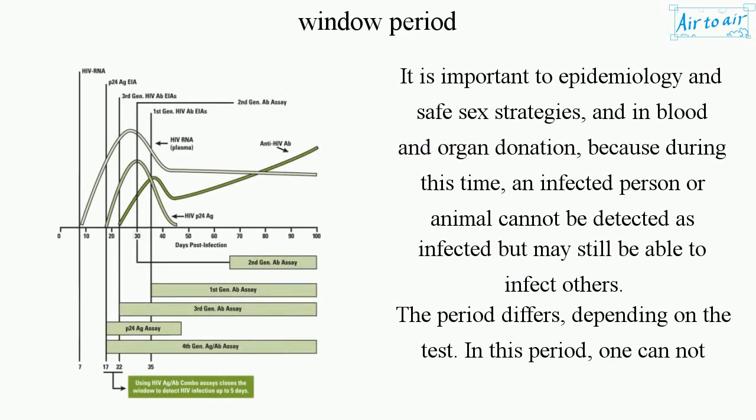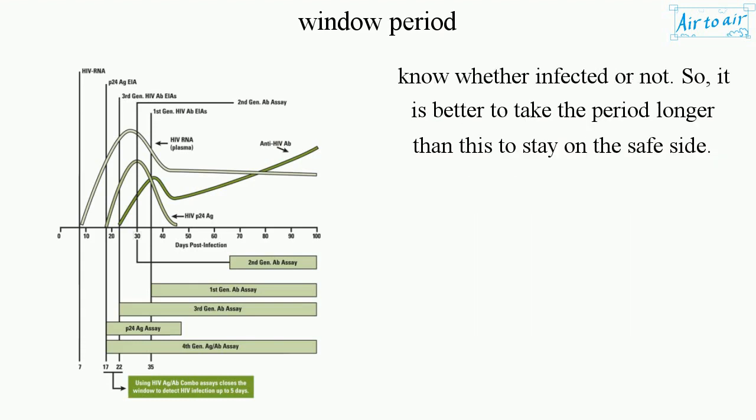It is important to epidemiology, safe sex strategies, and blood and organ donation, because during this time an infected person or animal cannot be detected as infected but may still be able to infect others. The period differs depending on the test, and during this period one cannot know whether infected or not — so it is better to take a period longer than this to stay on the safe side.